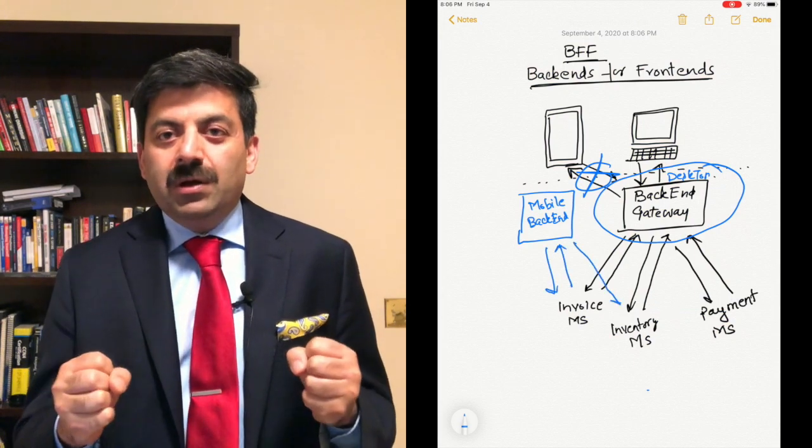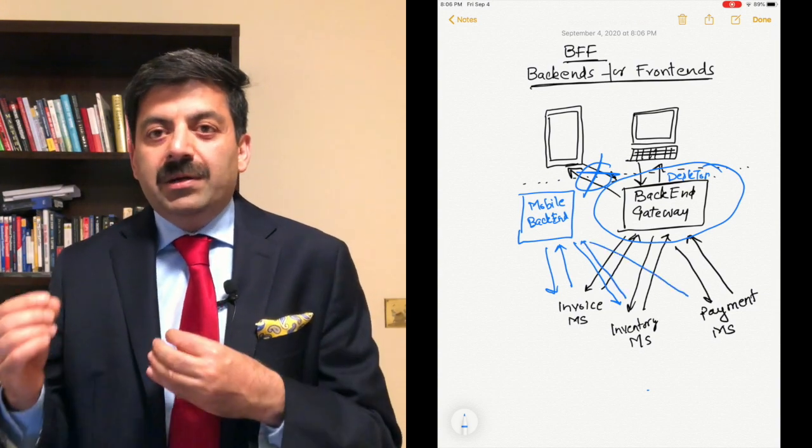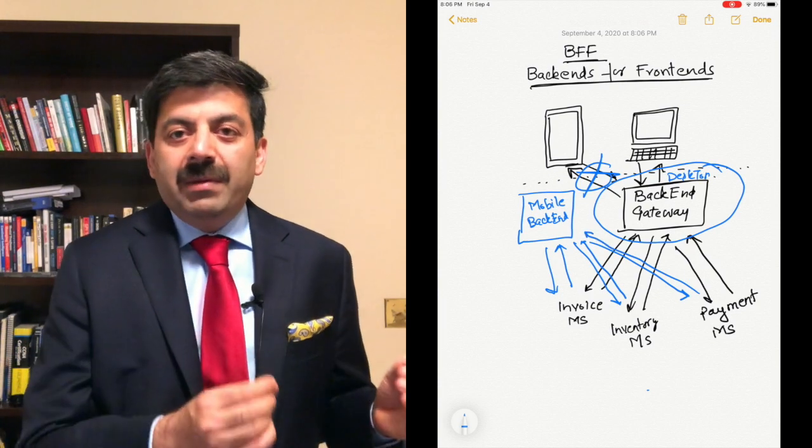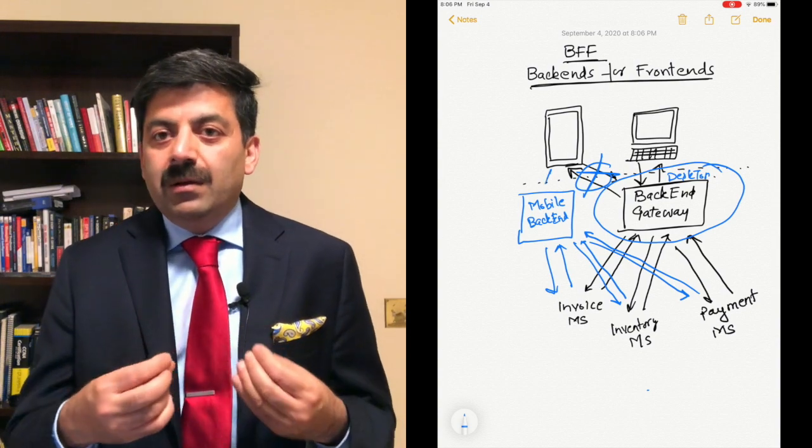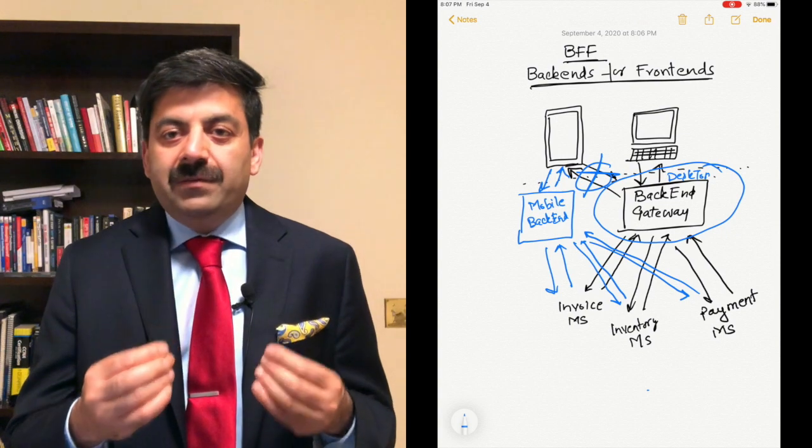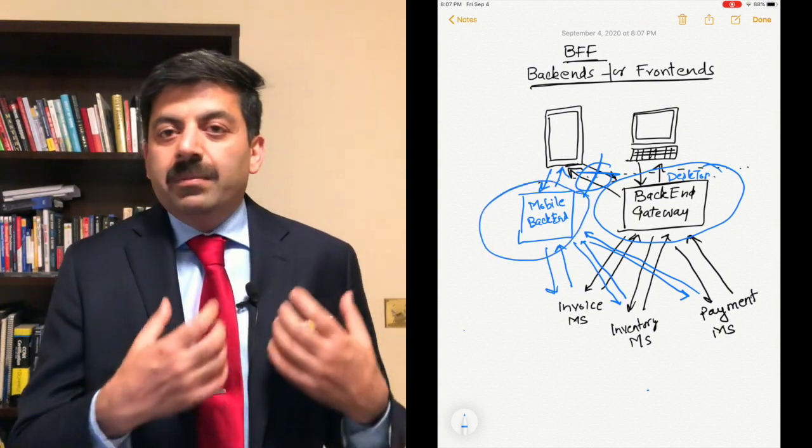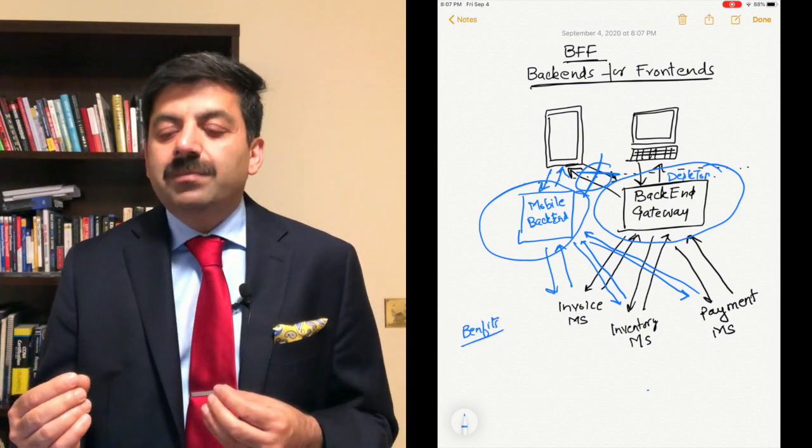How do we solve this problem? By making sure we have a different backend for desktop and different backend for mobile. This way, mobile team can develop on their BFF, they can build their own functionalities and they can deploy, upgrade their BFF independent of the desktop.